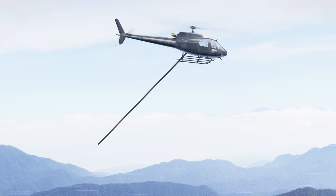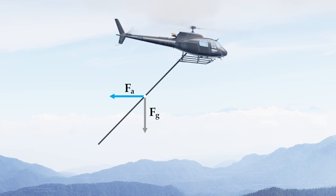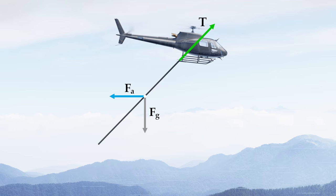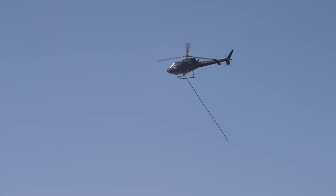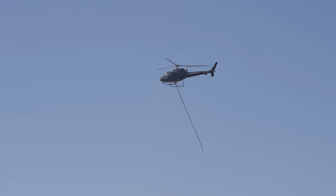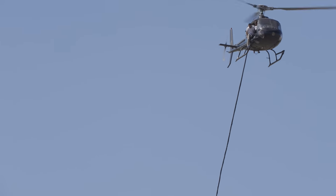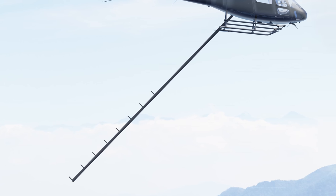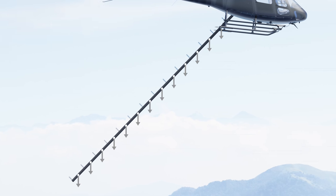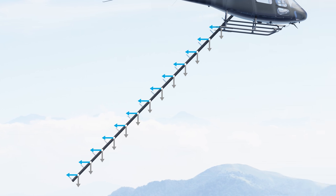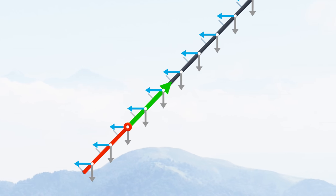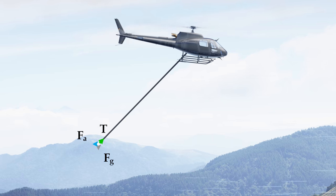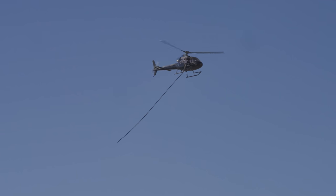There are two external forces acting on the rope: gravity pulling it down and air resistance to the left. When flying along at constant speed, these forces must be perfectly balanced by the tension in the rope. The rotor wash doesn't extend very far down below the helicopter — it dissipates pretty quickly. So you can consider the air resistance on the rope as entirely due to its motion through still air. Imagine dividing the rope up into many short sections. Each section has the same weight and experiences the same air resistance because it has the same cross-sectional area and is moving at the same speed.